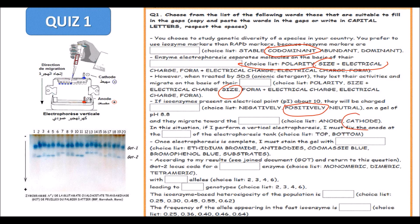In this situation, if I perform a vertical electrophoresis, I must fix the anode at the top or the bottom of the gel, at the top or the bottom of the electrophoresis tank. My proteins, my isozymes, will migrate toward the cathode. So I have to put at the top the anode. Anode must be at the top of the electrophoresis tank, the electrophoresis apparatus.